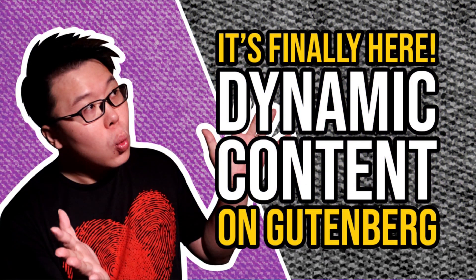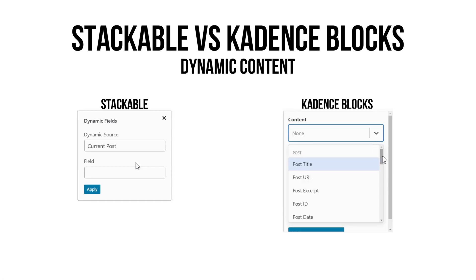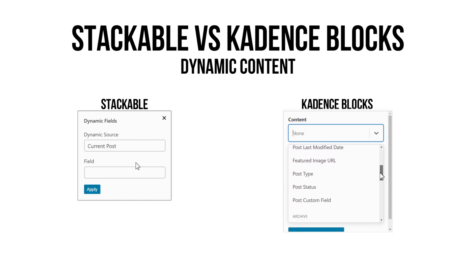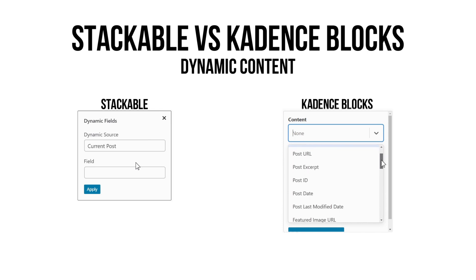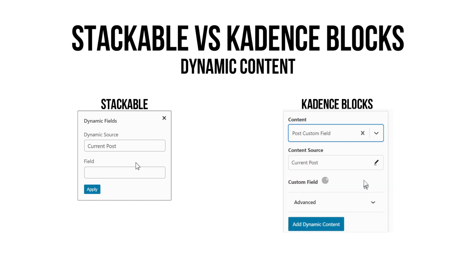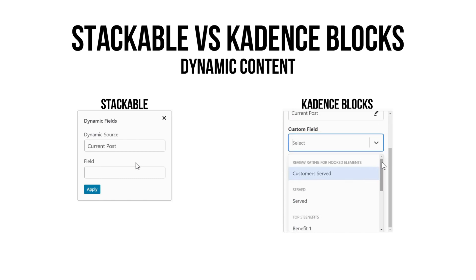When it comes to Cadence's dynamic content, it is structured a little differently. You still have all the standard post items, archive items, the site, and author items. But what's different is that the custom fields are nested in the categories. So if I click on the post custom field, it will ask me where to source the content, and then I can select the custom field I've created with ACF. I feel this is more organized.